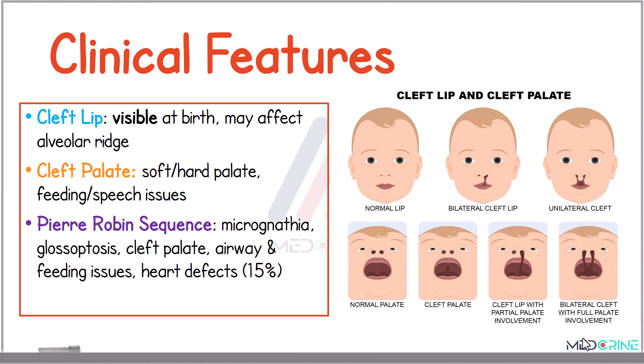In children with Pierre Robin sequence, we could realize a process of micrognathia, glossoptosis, cleft palate, and airway or feeding issues together with heart defects.